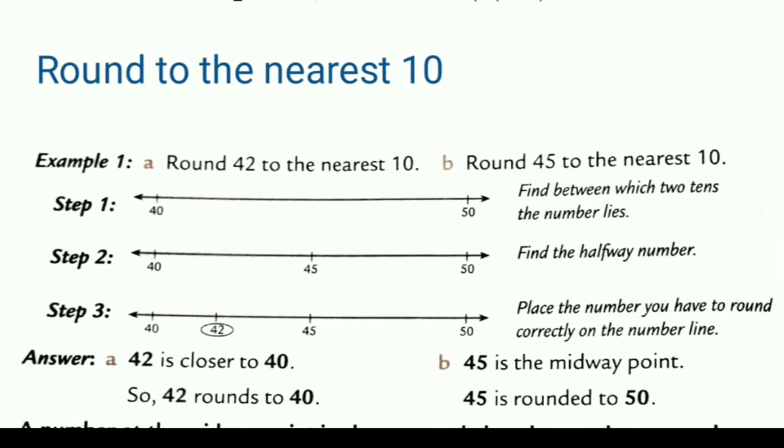Here we will see nearest 10 with the help of number line. The question is round 42 to the nearest 10. We will do step by step. 42 is the nearest of which two tens? It is 40 and 50. After this we will find halfway. Halfway means what is the half of 40 and 50? That is 45.